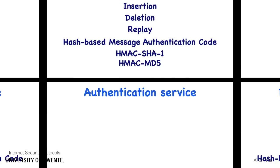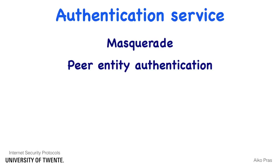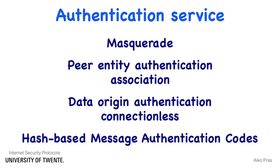Data Authentication is a security service that protects against masquerade attacks. There are two forms of this service. The first form is peer entity authentication, which is used whenever connections or associations can be established between both communicating parties. The second form is data origin authentication, which is used in connectionless environments. Like data integrity, authentication services rely on the use of hash-based message authentication codes.